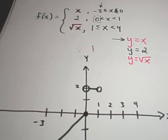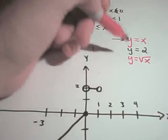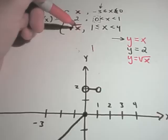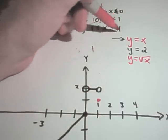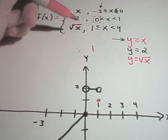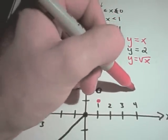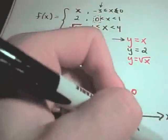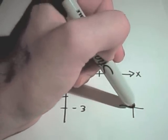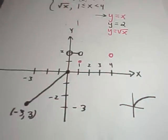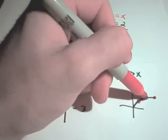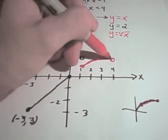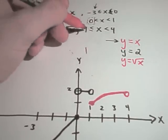For y equals square root of x, I'll graph this in red. Plugging x equals 1 in gives the square root of 1 equals 1, so I put a solid dot at 1 comma 1. Plugging x equals 4 in gives the square root of 4 equals 2, but since it's strictly less than I make an open circle there. Connecting the dots, I get the portion of y equals square root of x from x equals 1 to x equals 4.